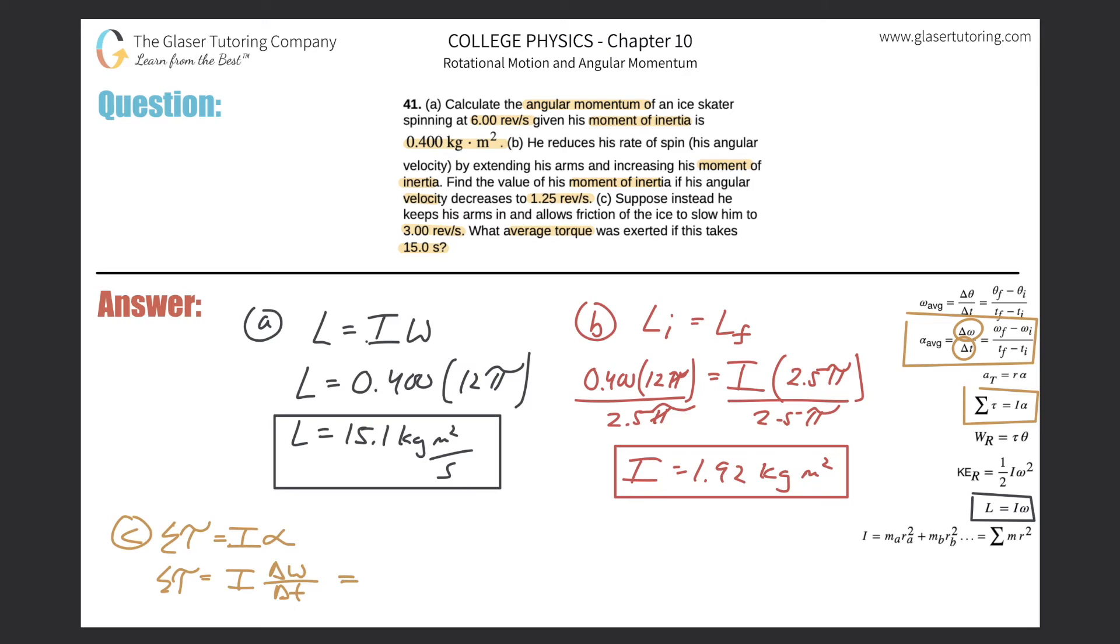So the moment of inertia is 0.4. The change in angular velocity is the final value, so it's going to be three revolutions per second, multiply that by 2π. That's 6π radians per second, minus then the initial value of 12π. All divided by, it takes 15 seconds to slow down.